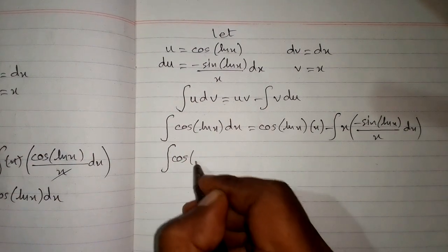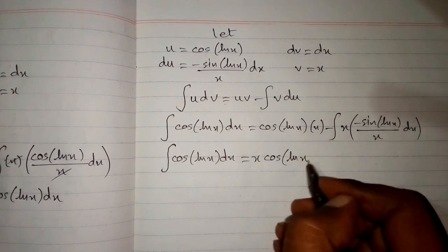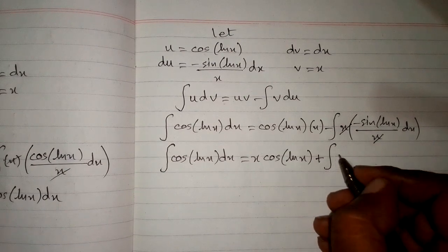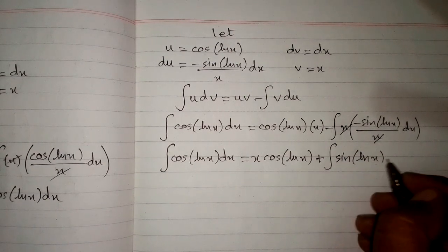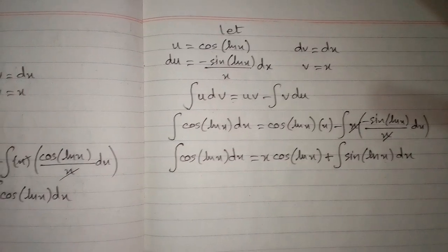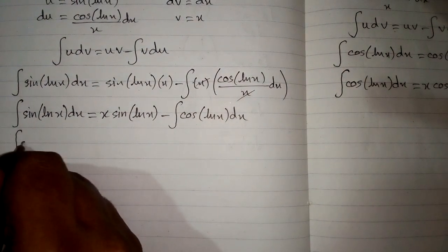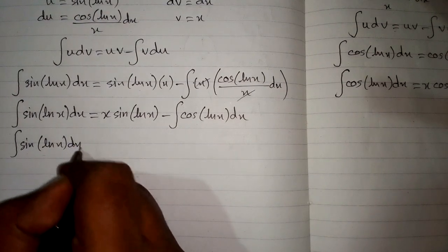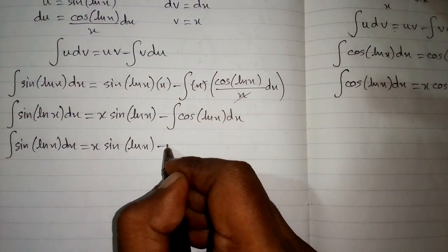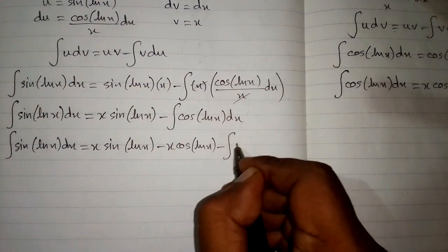So the integral of cosine of ln of x dx equals x times cosine of ln of x, plus the integral of sin of ln of x dx, after canceling the x terms. Substituting back, the integral of sin of ln of x dx equals x times sin of ln of x, minus x times cosine of ln of x, minus the integral of sin of ln of x.